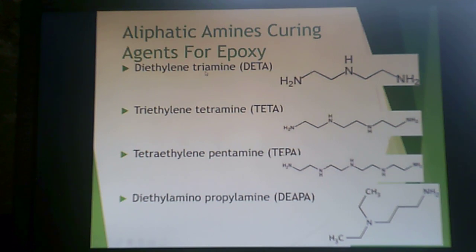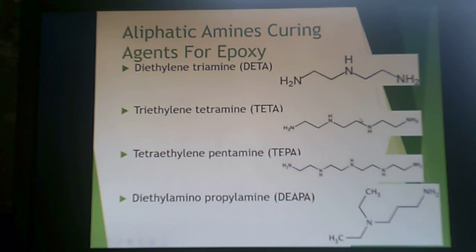Diethylene triamine (DETA) has two ethylene groups and three amine groups. Triethylene tetramine (TETA) has three ethylene groups and four amine groups. These are how the naming convention works for these aliphatic amines.